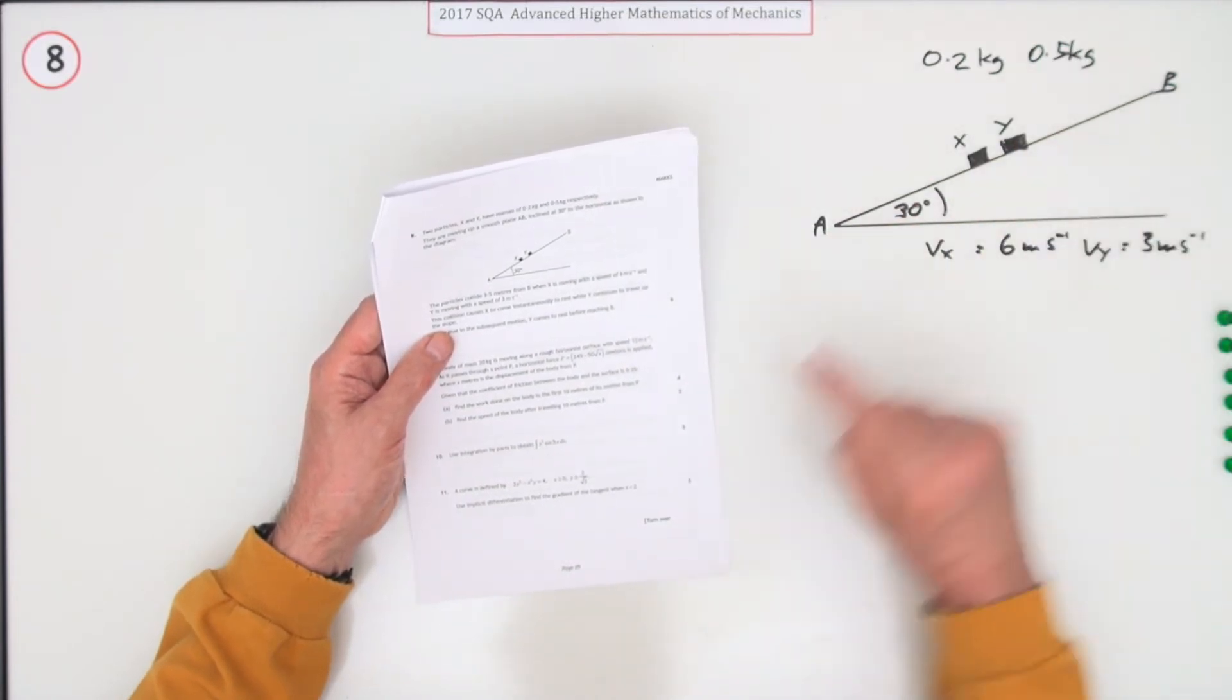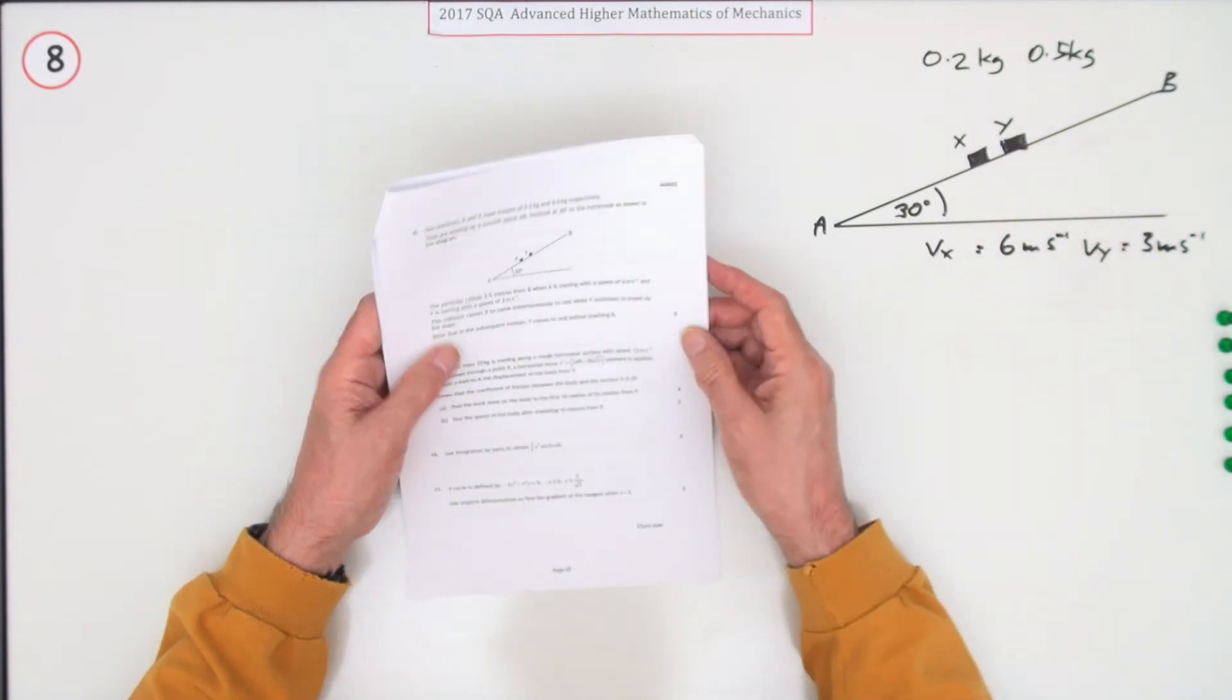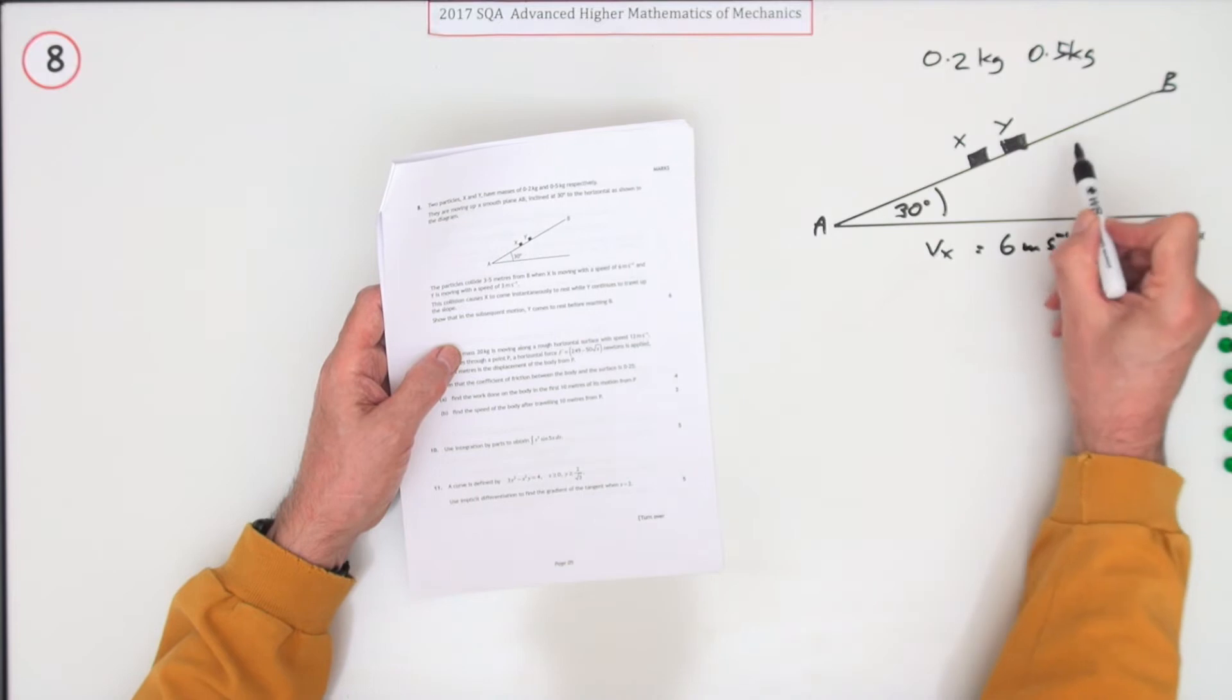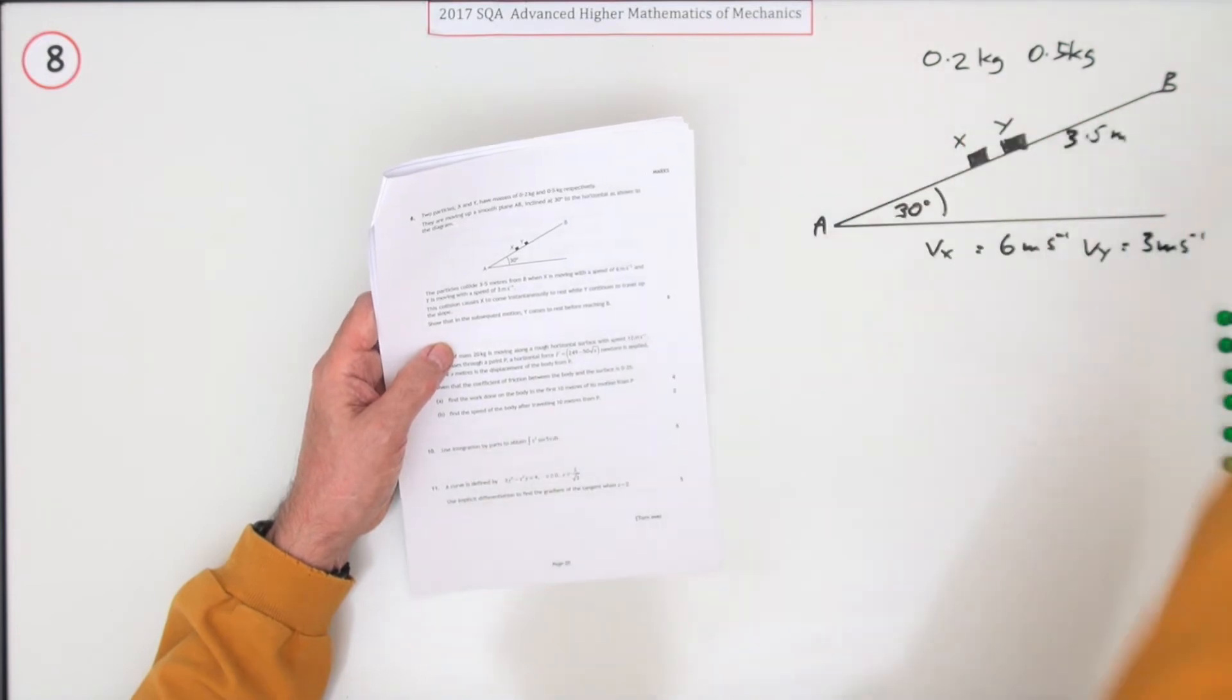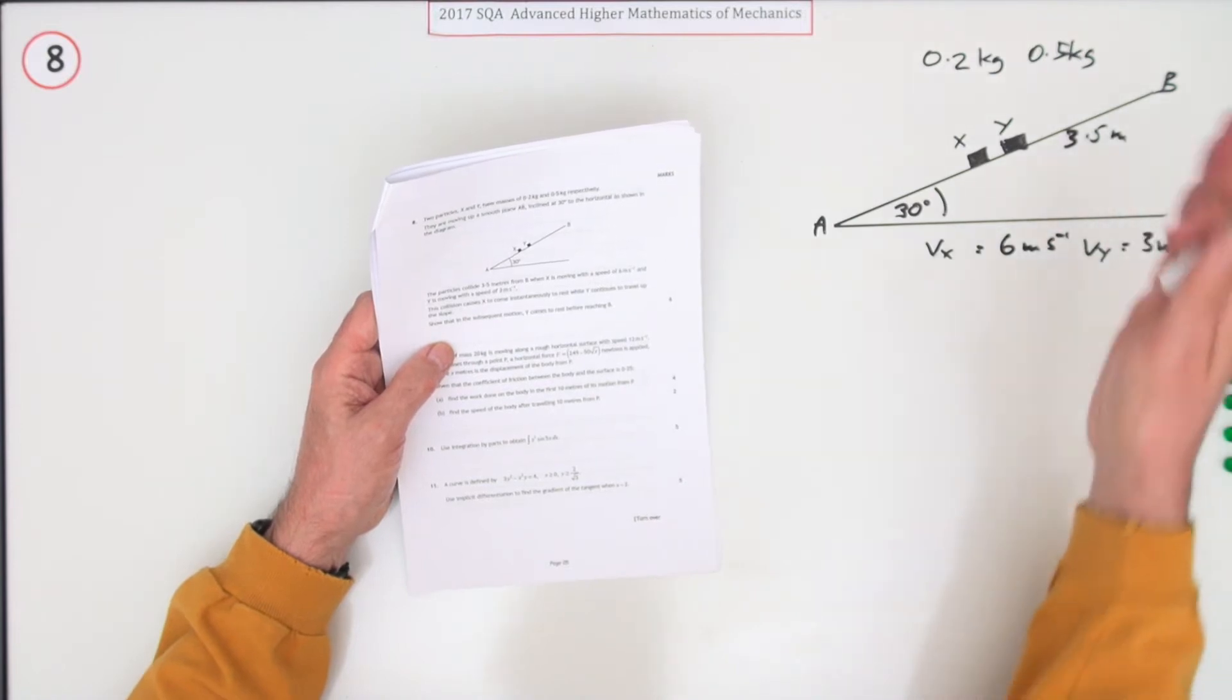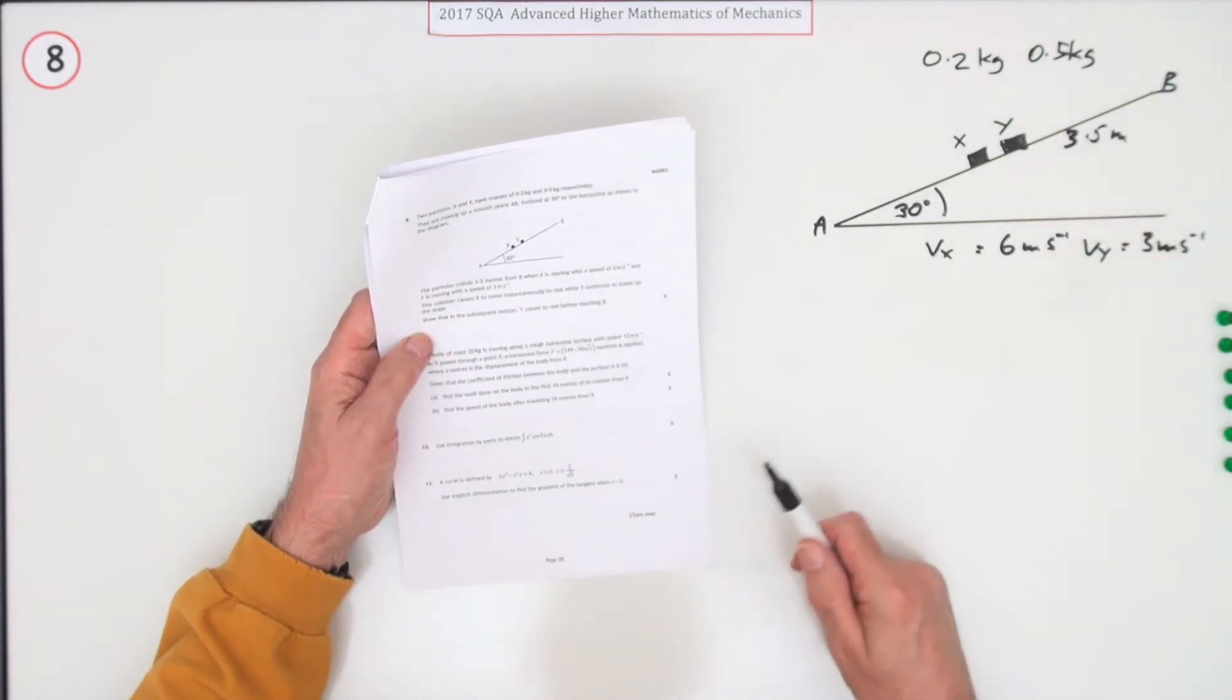They're both travelling up the slope just now. X is going faster at six, Y is going at three. When they collide, which happens 3.5 metres from B, X comes to a stop so Y then shoots off but it'll get slowed down as it's travelling up so it'll eventually come to a stop and the question is will it reach B before it stops?